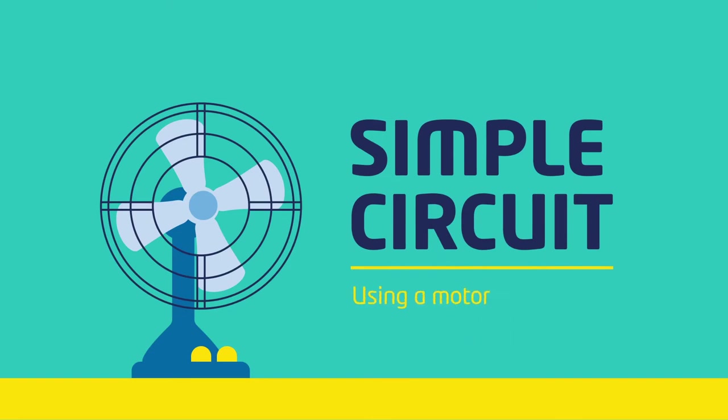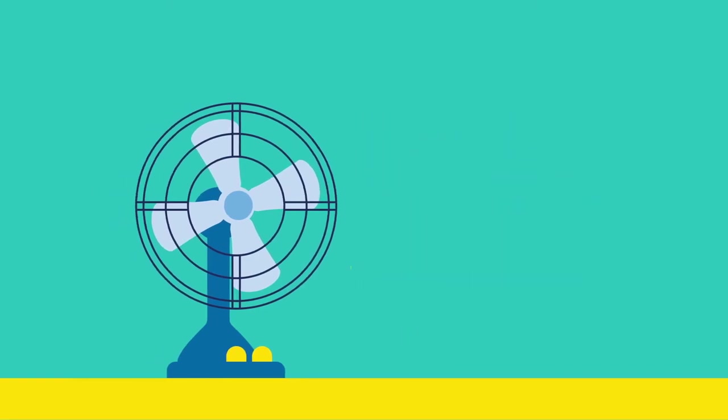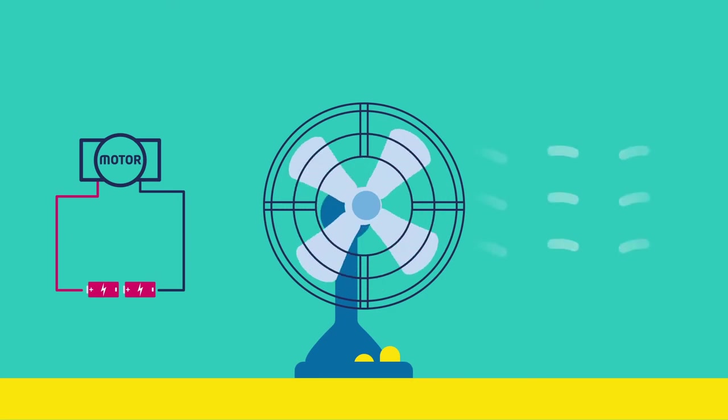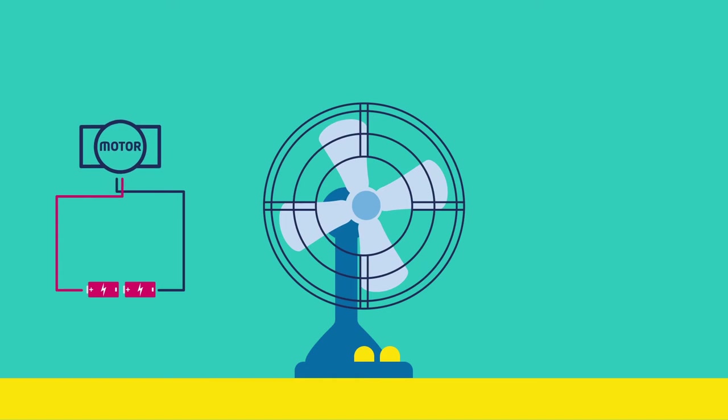When we have a simple circuit with a motor in it instead of a bulb, we can do something a little bit different. We can swap around the flow of electricity to the motor. When we do this, it changes the direction in which the motor spins.